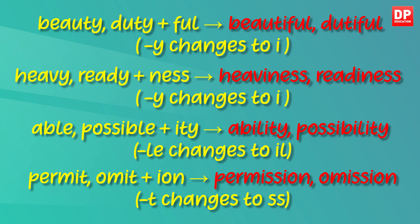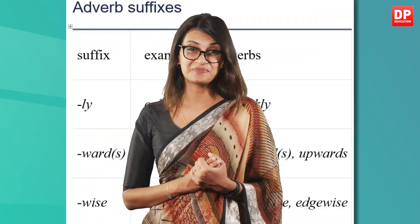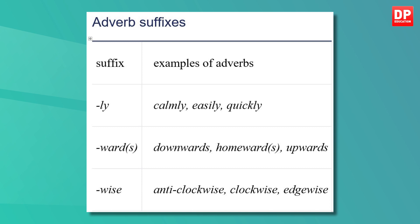The t changes to a double s in those cases. You also have some adverb suffixes. -ly: calmly, easily, quickly. -wards: downwards, homewards, upwards. -wise: anticlockwise, clockwise, edgewise.